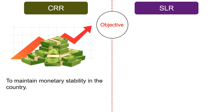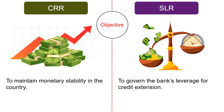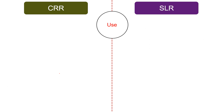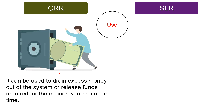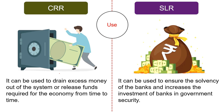In terms of objective, with CRR the central bank aims at maintaining monetary stability in the country, whereas SLR governs the bank's leverage for credit extension — a change in SLR determines the bank's leverage position to pump or withdraw money into the economy. In terms of use, the central bank can use CRR as a tool to drain out excess money from the system or release funds required for the economy from time to time. Conversely, SLR is another tool in the hands of the central bank which ensures the solvency of banks and increases their investment in government securities.